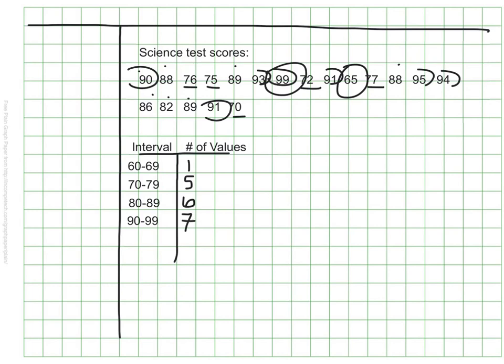With this table of data ready, I can now make a histogram. Like a line plot and a bar graph, I need to create a horizontal line with my numerical values. This time, however, my values are the intervals that I created. I'm going to make them a little wider than a normal graph. I need to make sure, though, that they are all the same size as one another.